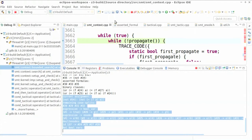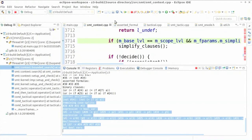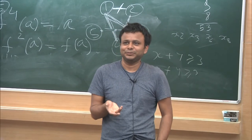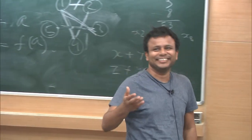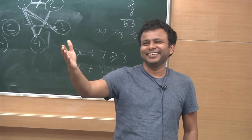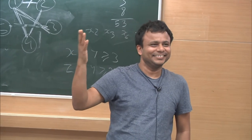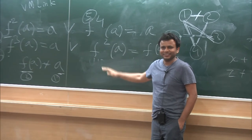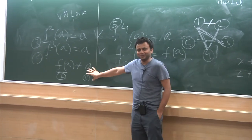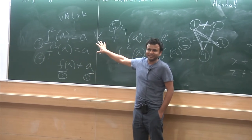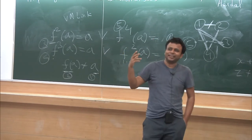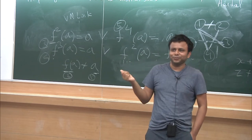Continuing, the next step is 'decide.' What does decide do? There are 4 literals yet to be decided, and not all asserted clauses have become true. The solver picks one of those literals and sets it true or false. In a naive implementation you might always set it to true to make clauses more likely satisfied, but that is not always a good idea.